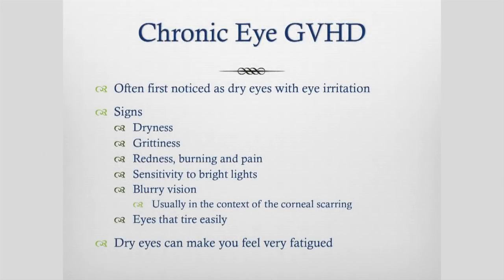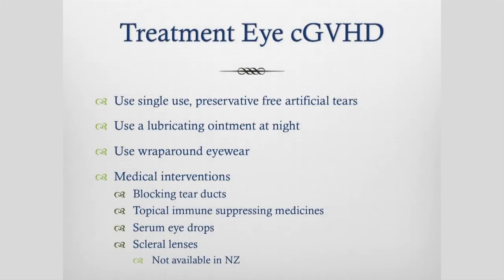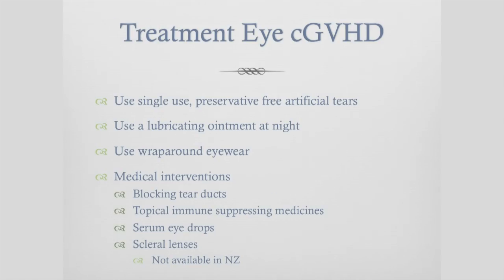Chronic eye graft versus host disease often presents as dry eyes with dryness, grittiness, redness, burning and pain. You may have sensitivity to bright lights, blurry vision in the context of scarring of your cornea, and eyes that tire easily. Dry, sore eyes can also make you feel really fatigued. For treatment, you should use single-use preservative-free artificial tears to keep your eyes moist — you may be using those every hour during the day. At night it's important to use lubricating ointment, since during sleep your eyes move around the insides of your eyelids and if your eyelids are dry you're potentially grazing your cornea.